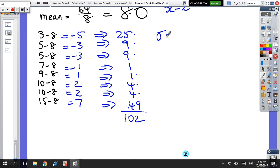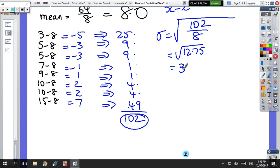Okay, so the formula says square root of that number, 102, divided by how many scores there were, 8. So I get my calculator out. So 102 divided by 8 equals 12.75, and then I just square root the answer, and I get 3.57. So that would be the standard deviation for that set of scores.